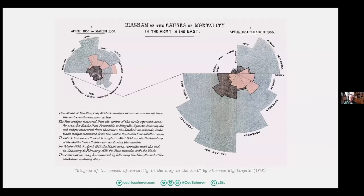Another famous example is the Rose Diagram by Florence Nightingale, showing the causes of mortality in the army. She wanted to highlight that most deaths could be prevented by preventing disease in soldiers — not so much from fighting. On the right, the blue slices are very long; on the left they get smaller over time, showing the influence of healthier conditions.